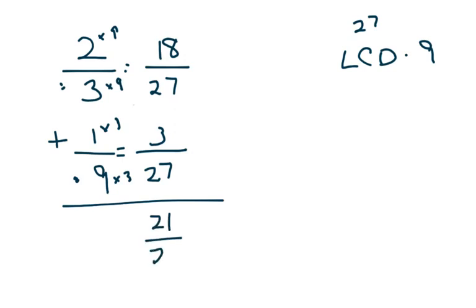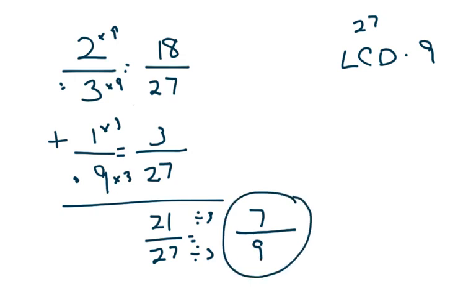The bottom number stays 27, and then you have to simplify. I'm going to divide both by three: 21 divided by three is seven, and 27 divided by three is nine, so the final answer would be seven-ninths.